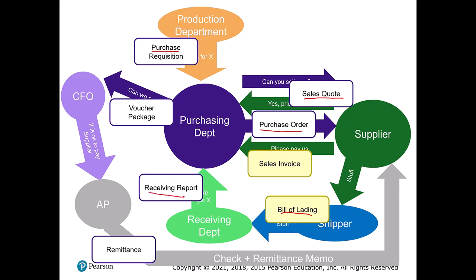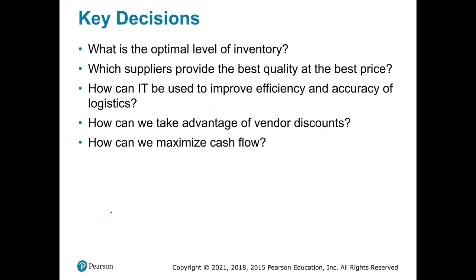We get a receiving report from the warehouse saying what we actually received from the vendor. The purchase requisition, receiving report, sales invoice, and purchase order are all elements the purchasing department combines to make sure they align. In the real world these can differ: production asked for 200 units, we ordered 220 for a better price, only 205 shipped, and one was broken and returned. The purchasing department reconciles all these documents into a voucher package so the CFO can see exactly what needs to be paid. The CFO approves it and a remittance goes with the check to the supplier.